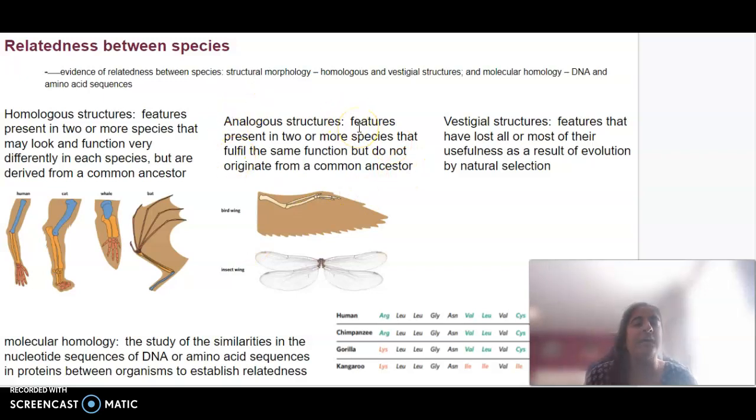An analogous structure is a feature present in two or more species that fulfill the same function but don't originate from a common ancestor. So homologous structures come from a common ancestor and may function differently, while analogous structures function similarly but don't share a common ancestor.